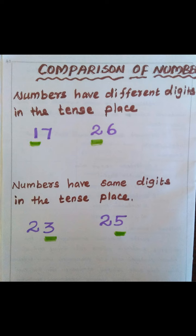Can you guess the smaller number? Yes — 23 is the smaller number. How? We have to look at the ones place. 23 has 3 ones and 25 has 5 ones. So which is the smallest — 5 or 3? 3. So 23 is the smallest number. Can you understand, students?